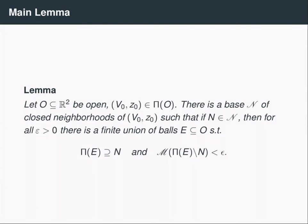The main lemma we'll need to prove Falconer's theorem is the following: suppose we have an open set O and a point (V0, Z0) inside the projection of this open set. Then we can find a base of closed neighborhoods around this point so that for any set inside this base, and for any epsilon, we can find a set E that is a union of balls contained in our open set, whose projection contains the base element N, and the difference in measure is less than epsilon. Recall that a base at a point is a collection of open sets containing that point so that any open set contains an element of this base; here we take closures, just for technical reasons.